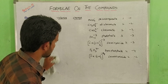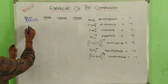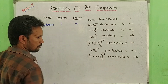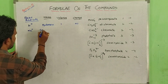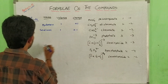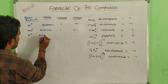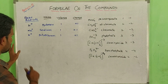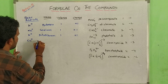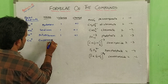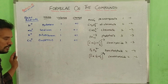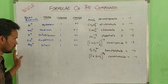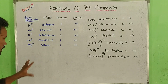Basic radicals means ions that exhibit positive character. Basic radicals: first is H plus — hydrogen. Valency 1, charge plus 1. Next, Na plus — known as sodium. Valency 1, charge plus 1. Next, K plus — known as potassium. Valency 1, charge plus 1. Next, Ag plus — silver. Valency 1, charge plus 1. All these are plus 1 elements.